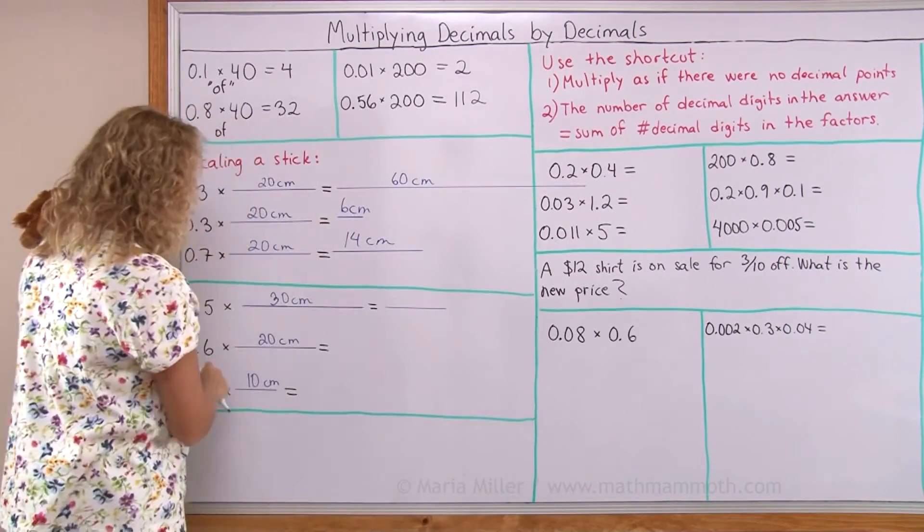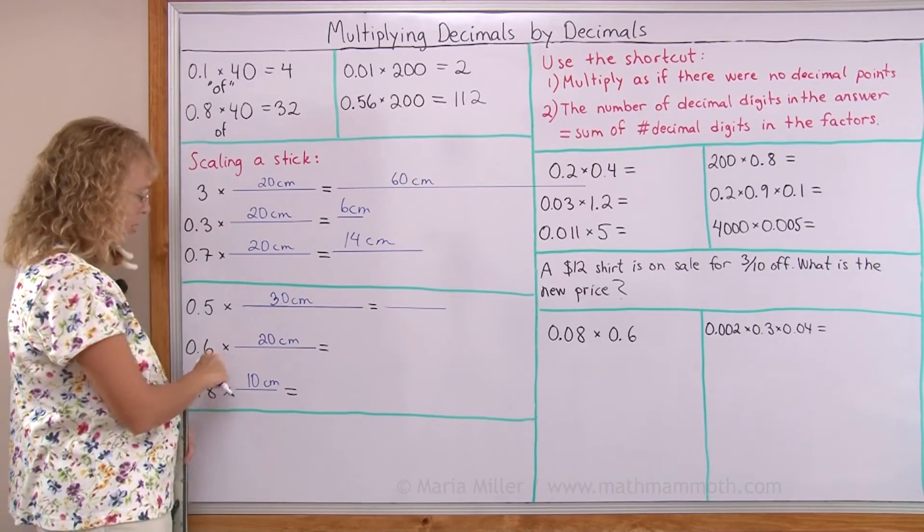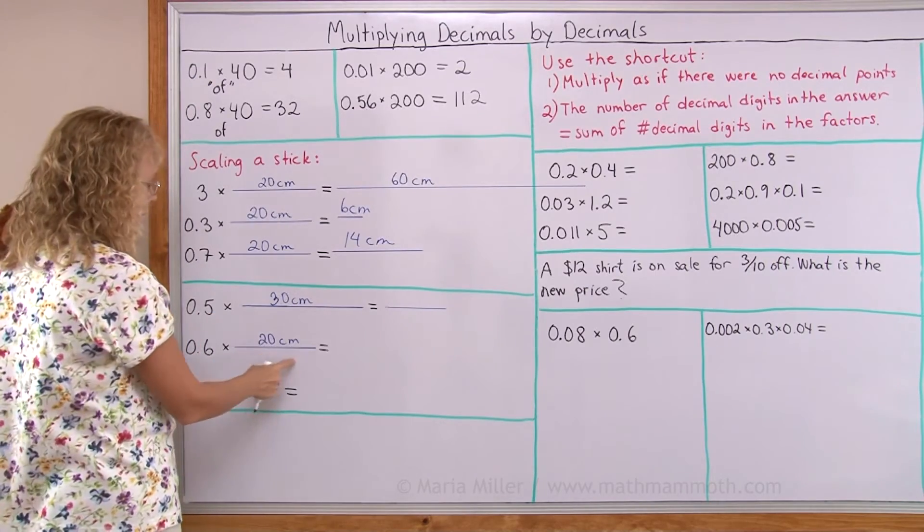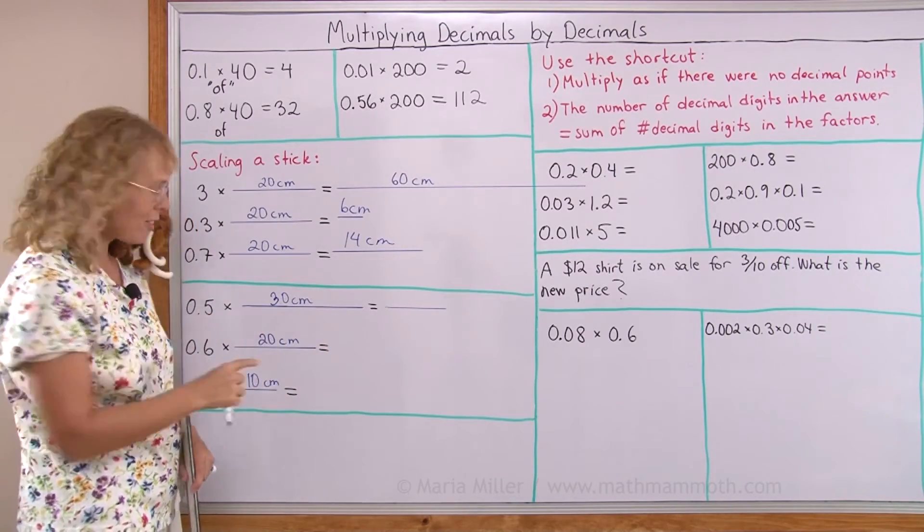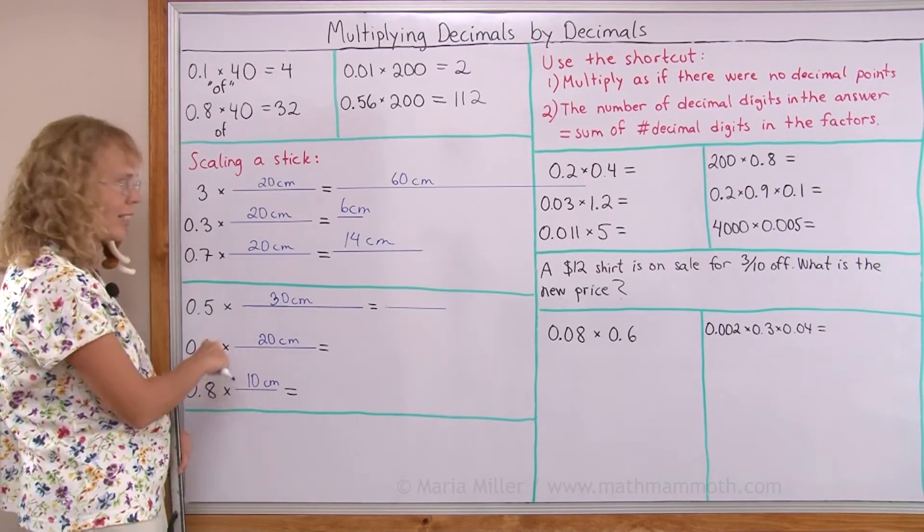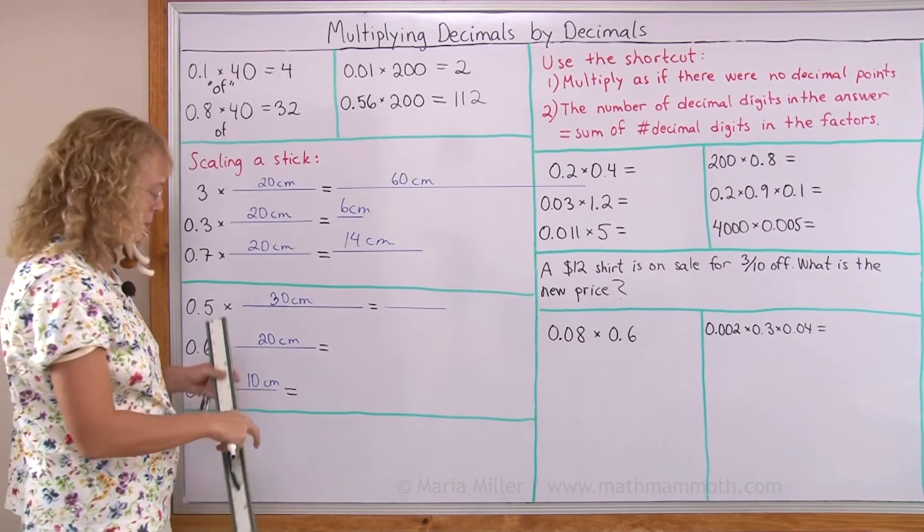And then here 0.6 or 6 tenths times 20 centimeters. Again 1 tenth of this was 2 centimeters. So 6 tenths is 6 times 2 centimeters. 12.